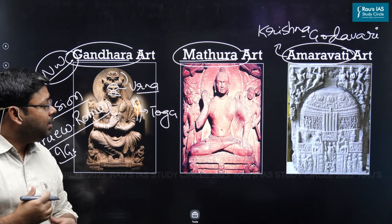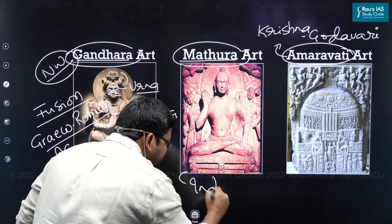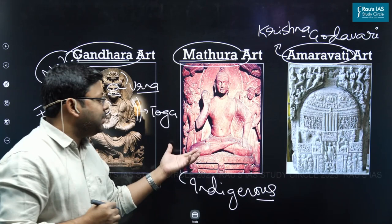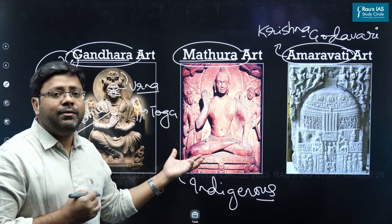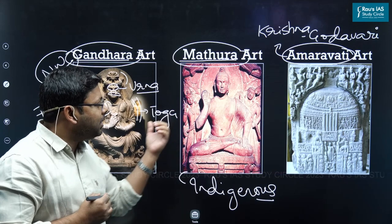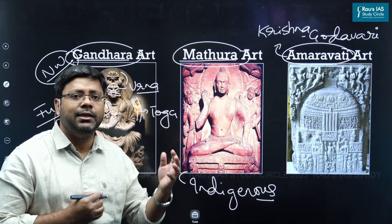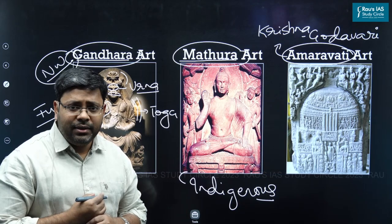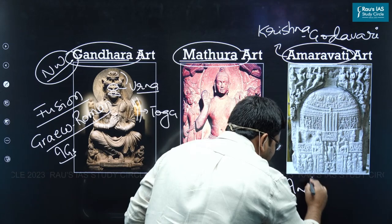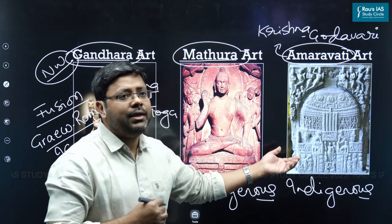The Mathura art form, on the other hand, is very much indigenous in its origin — it is an Indian style of sculpture in which Buddhist images are shown. Compared to Gandhara and Amaravati art forms, which are mainly Buddhist in their themes, the Mathura art form represents images from Buddhism, Jainism, and Hinduism — all three major religious traditions. The Amaravati art form is also indigenous in its origin, and its themes are mainly Buddhist in nature.